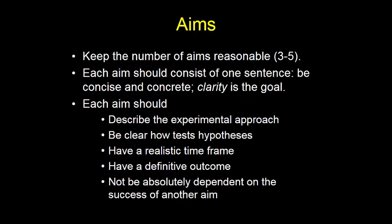Then you're going to state the actual aims. Five is kind of pushing it — three to five, probably better three, especially if you're going to have any sub-aims. Each single aim needs to have one sentence, be very concise, very concrete — clarity is the goal. Each aim needs to have several elements, so I've said it's very concise, but now I'm going to list like six things each one has to have. I think this is the hardest part of the grant.